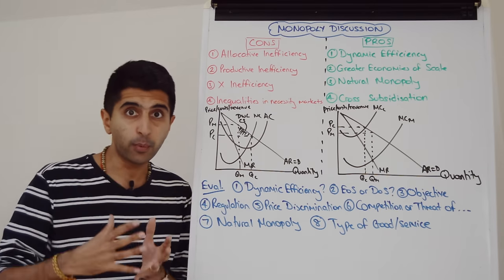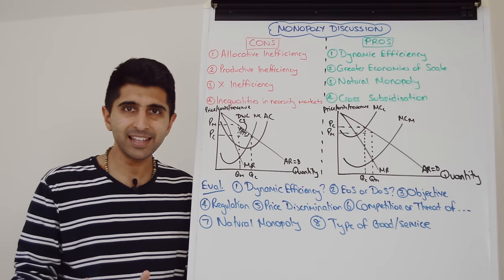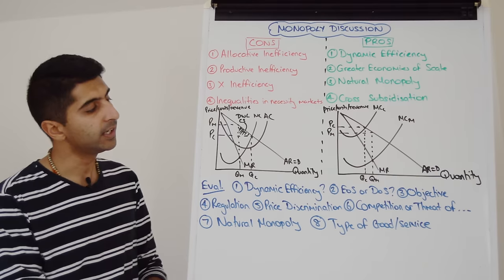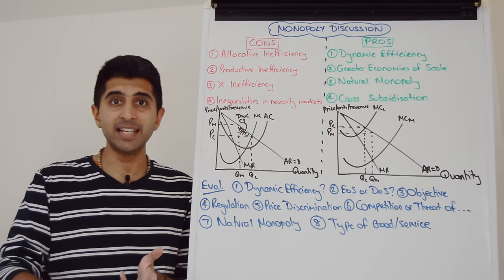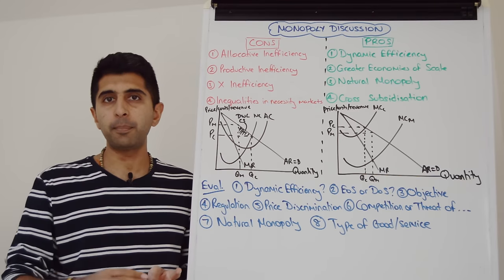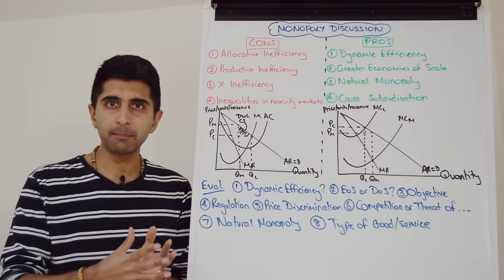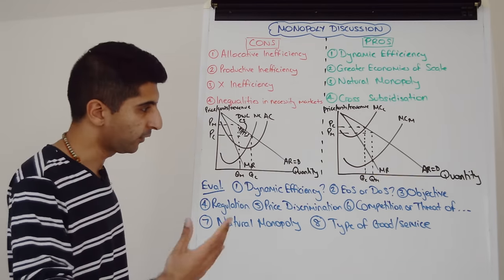We can critique whether dynamic efficiency is really going to occur. In theory we said yes, in reality so many other things could be done with the profit that monopolists make. They could give it to shareholders via high dividends, they could save it, they could deleverage pay off debts, they could pay their workers high salaries. That is not reinvesting back into capital in the business. So is there going to be dynamic efficiency? Not a guarantee.